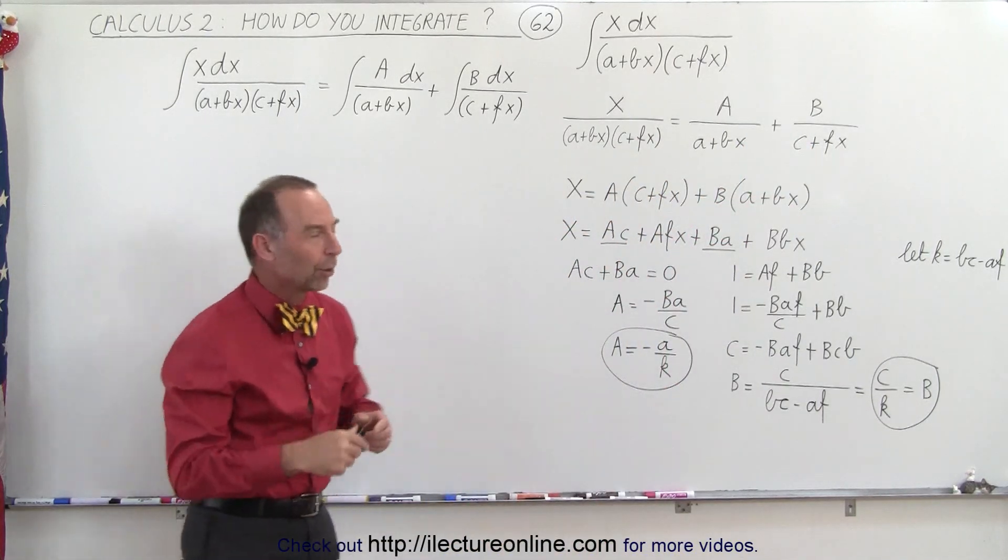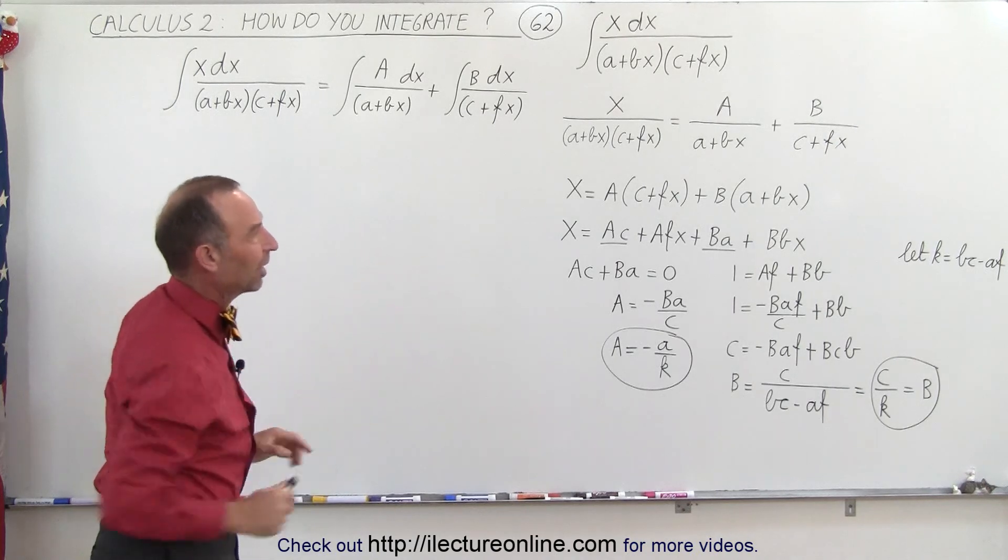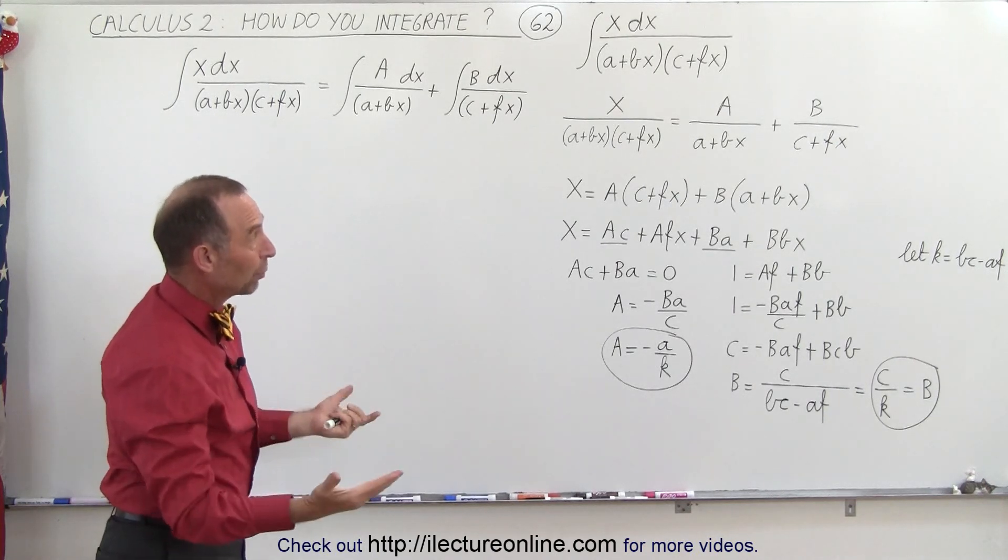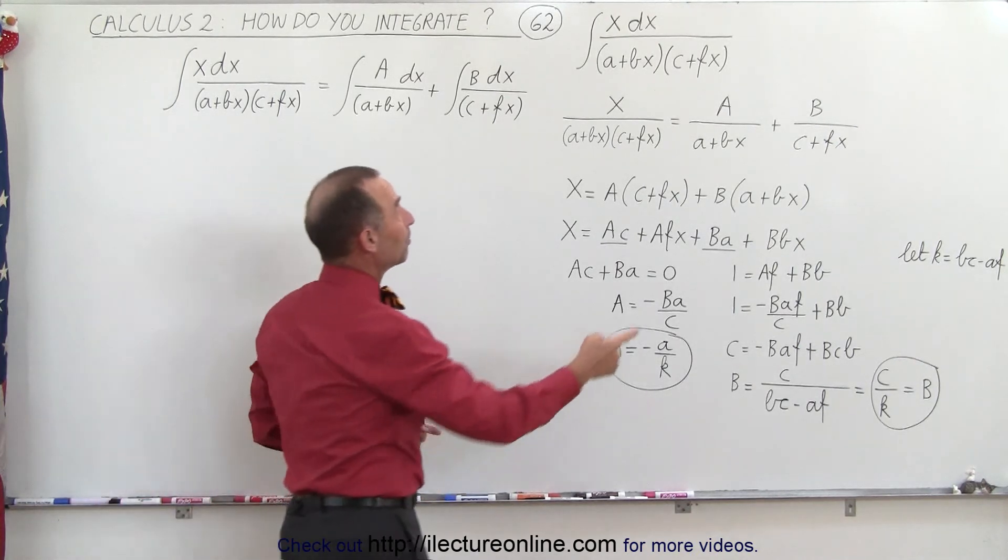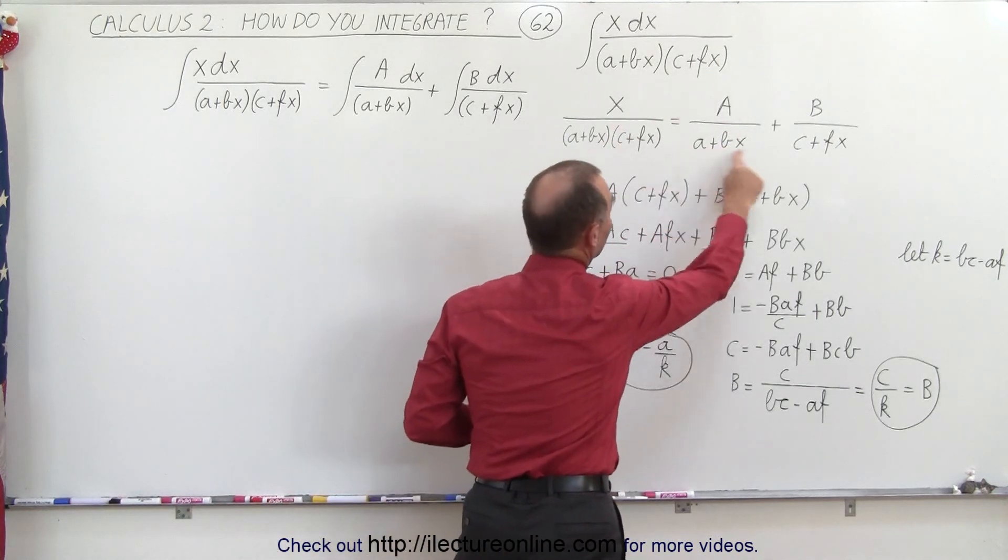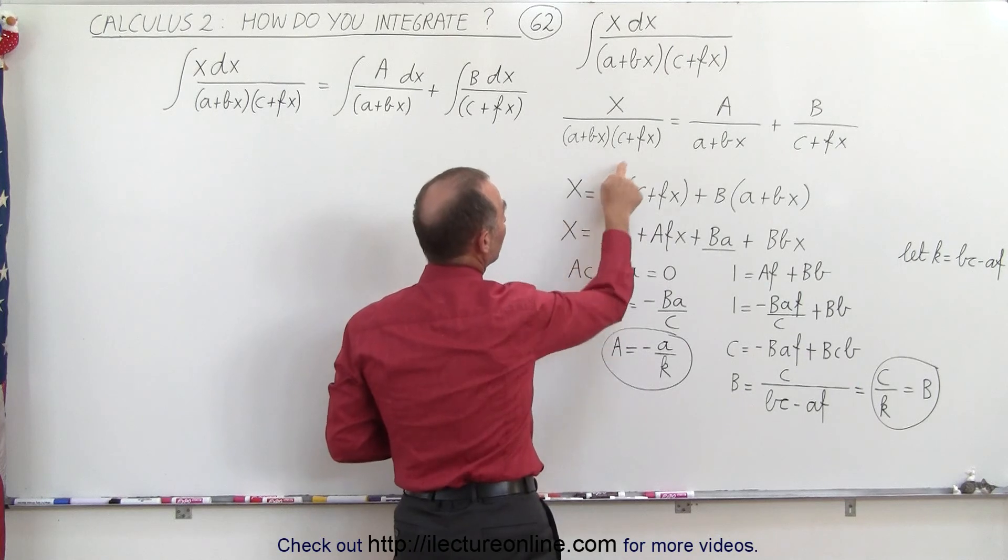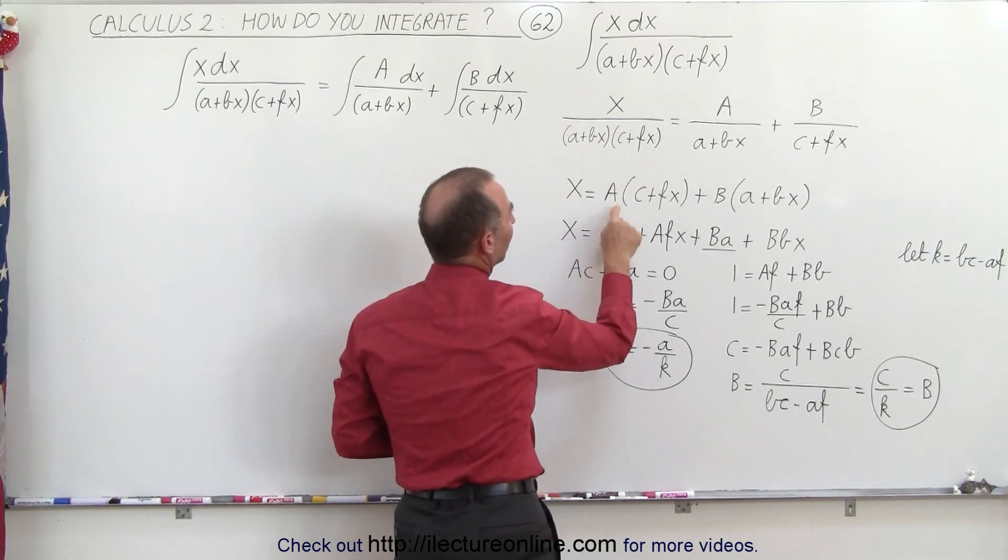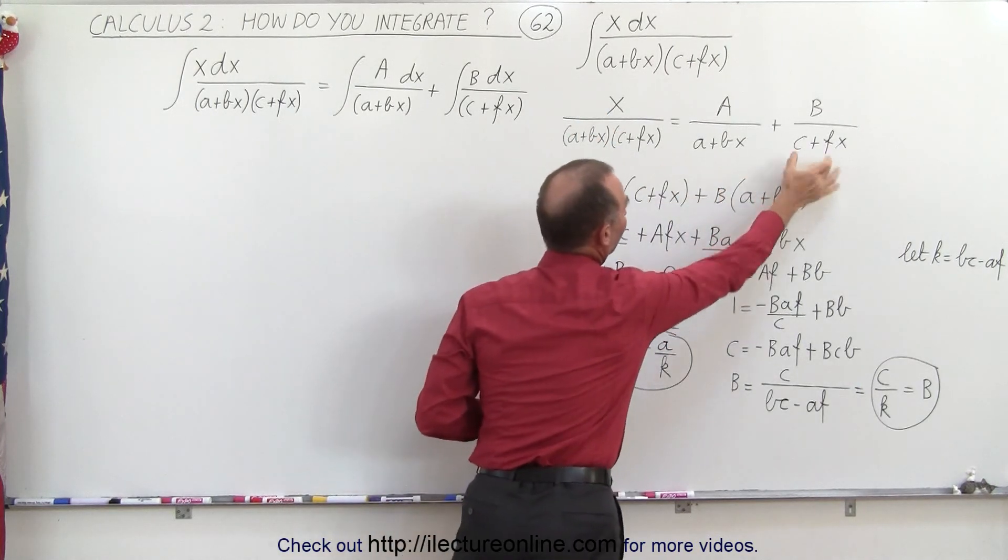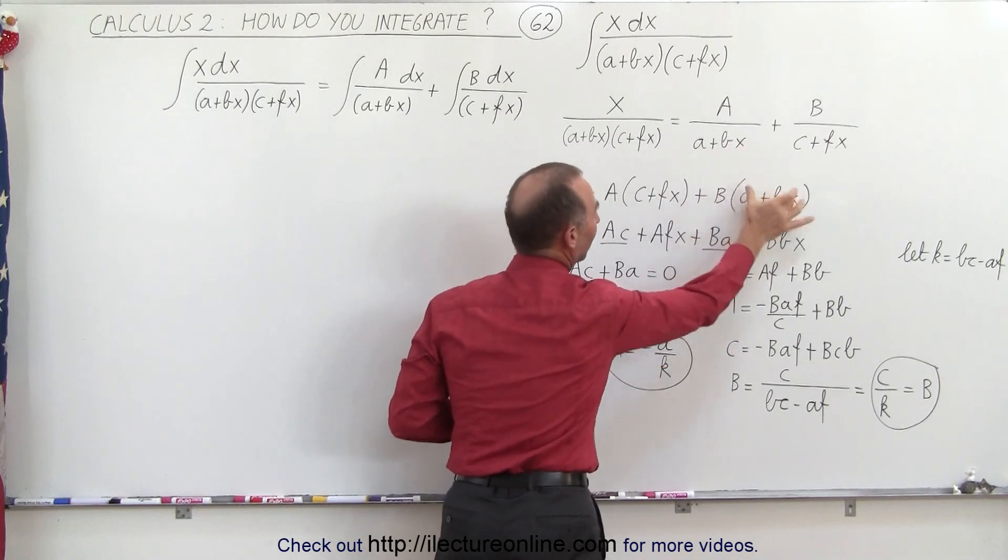So you can see I've already worked ahead a little bit because there's a lot of algebra in there. So what we're going to do is multiply both the left and the right side by the common denominator, which is the product of these two, which means on the left side we get x, on the right side we get A times c plus fx plus B times a plus bx.